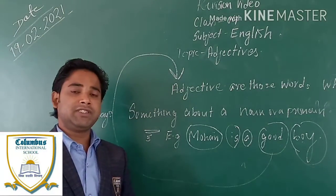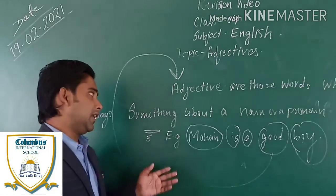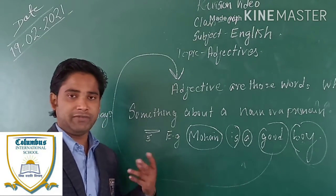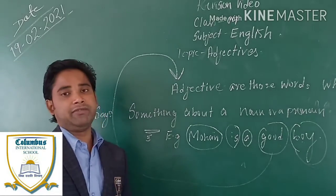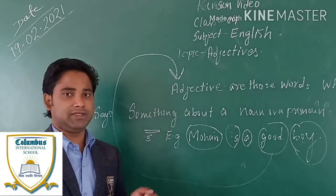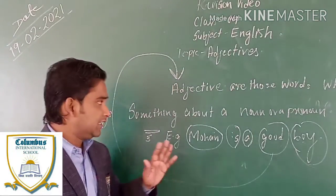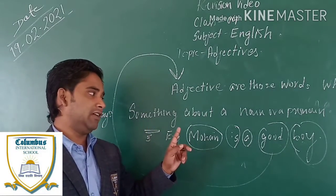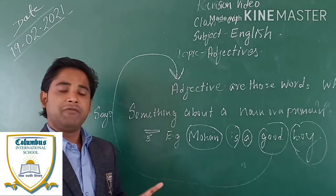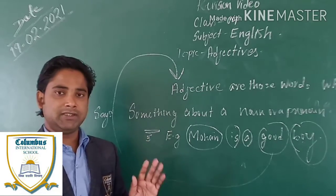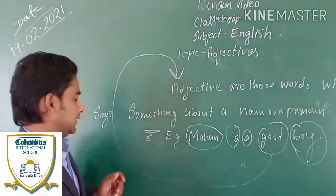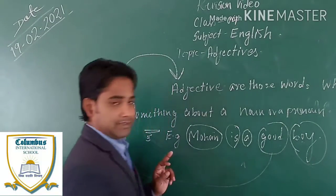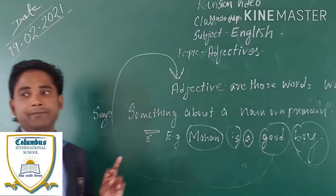If you go further, you will study about types of adjectives — qualitative adjective, quantitative adjective, demonstrative adjective, interrogative adjective, and various other types. But today in this video we will deal only with what an adjective is. Let us understand with a second example.